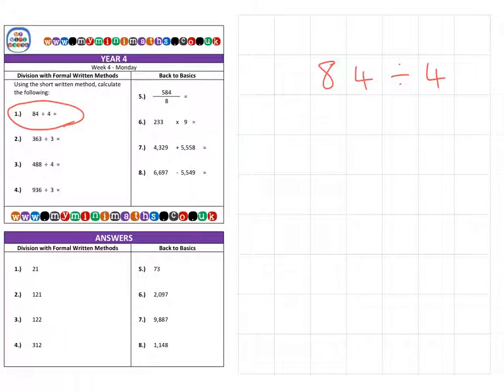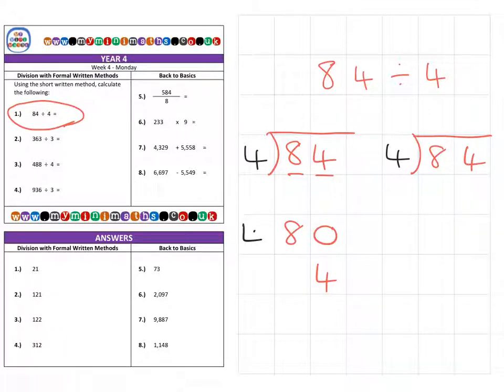So this first question, 84 divided by 4, I'll write it twice to explain what's happening. We can split the 84 into 80 and 4. How many fours fit into 80? That's 20. How many fours fit into 4? That's 1, giving us a total of 21.